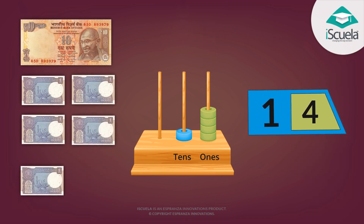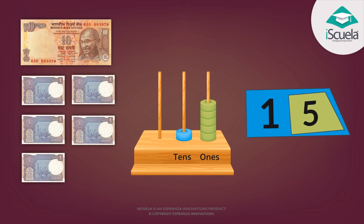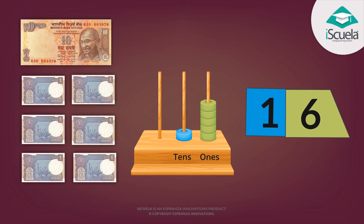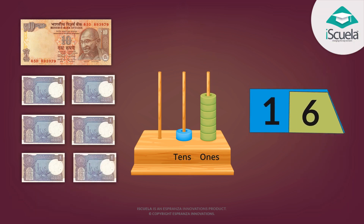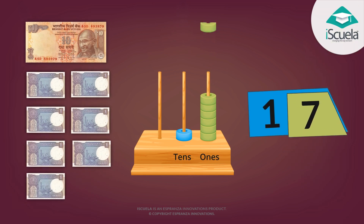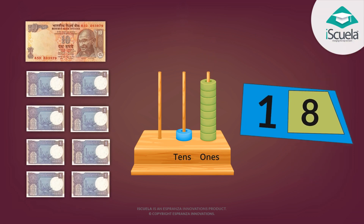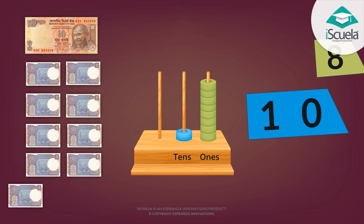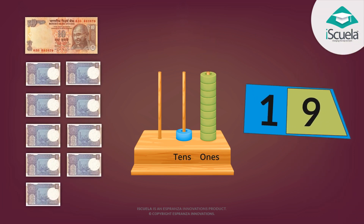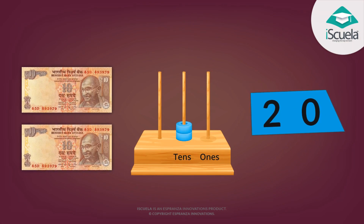Ten and one: eleven. Ten and two: twelve. Ten and three: thirteen. Ten and four: fourteen. Ten and five: fifteen. Ten and six: sixteen. Ten and seven: seventeen. Ten and eight: eighteen. Ten and nine: nineteen. And twenty.